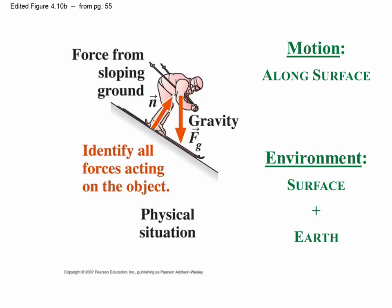The example is a skier on a slope. There's motion along the surface. That's going to define our choice for coordinate system. The environment is the surface with its normal force, the force from the ground, and the earth producing a force of gravity pulling the skier straight down towards the center of the earth.